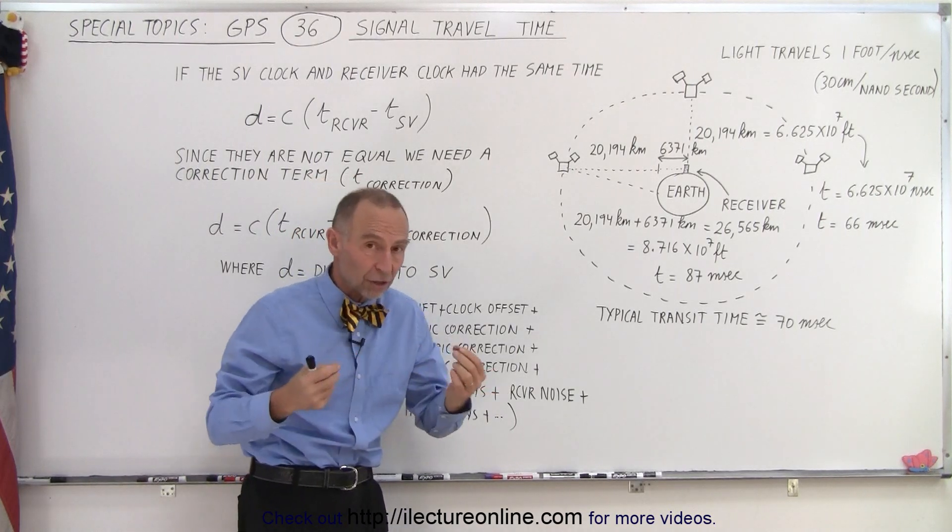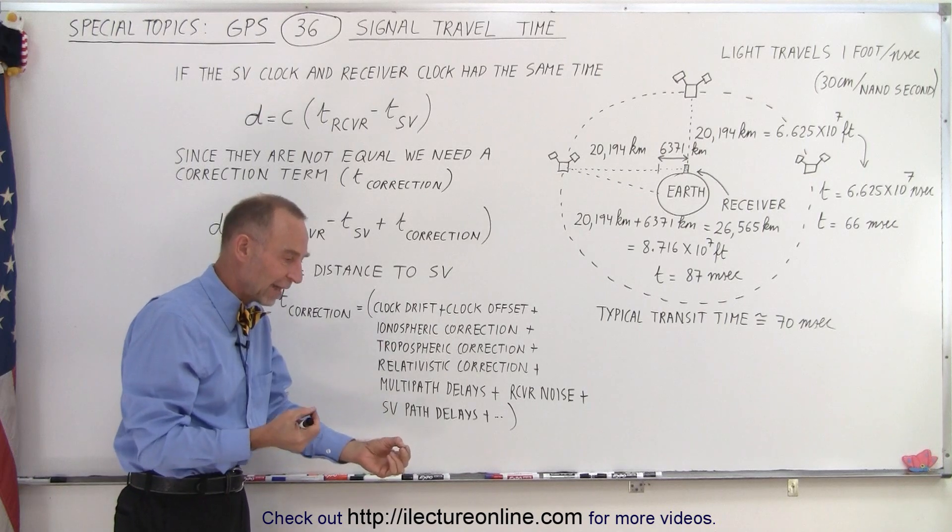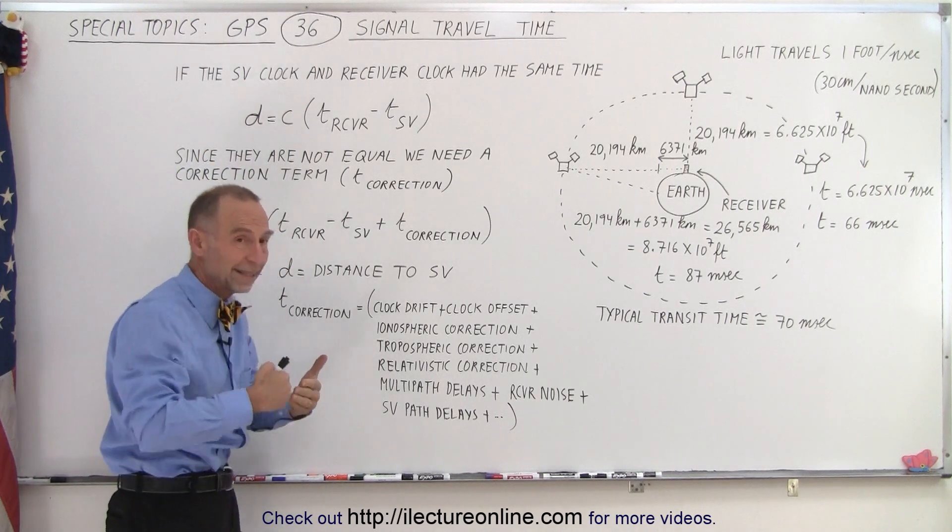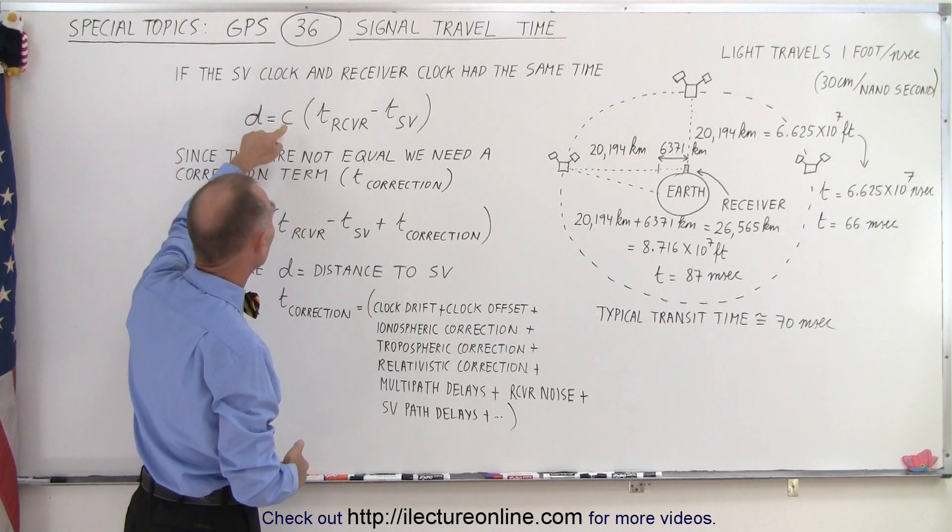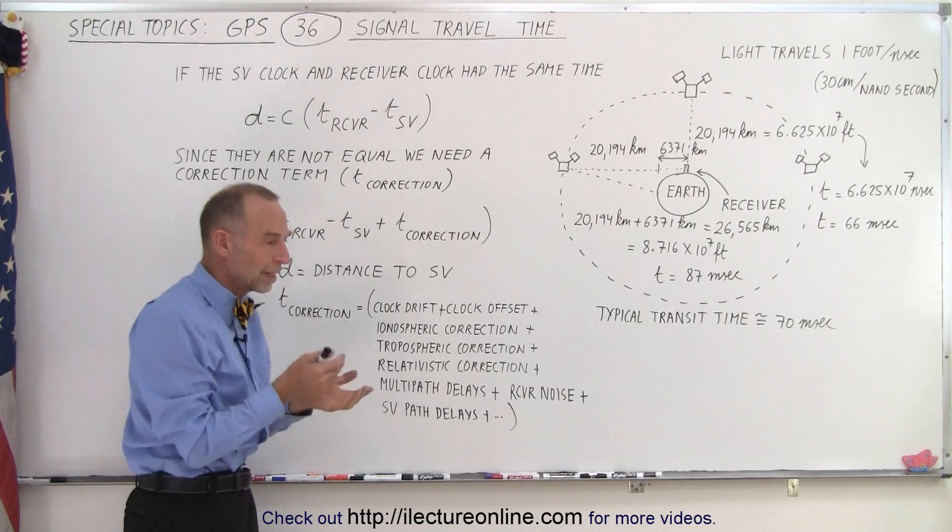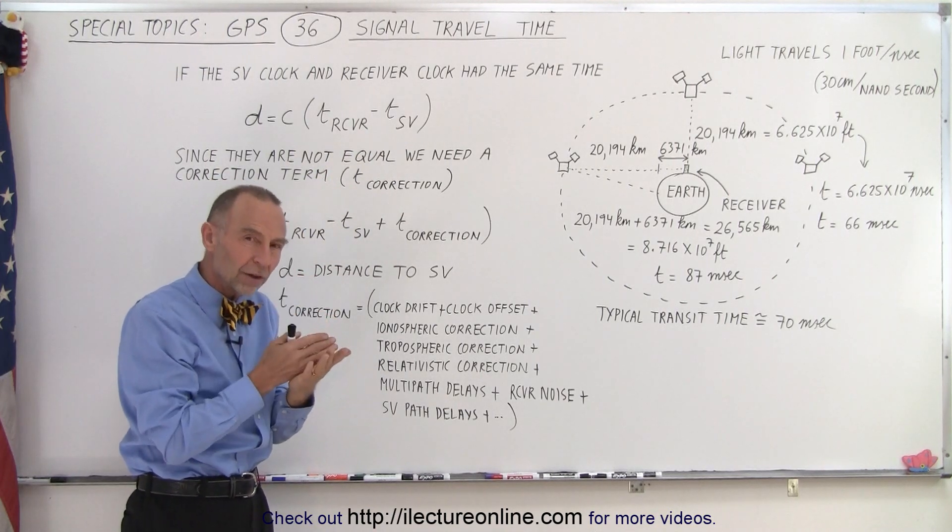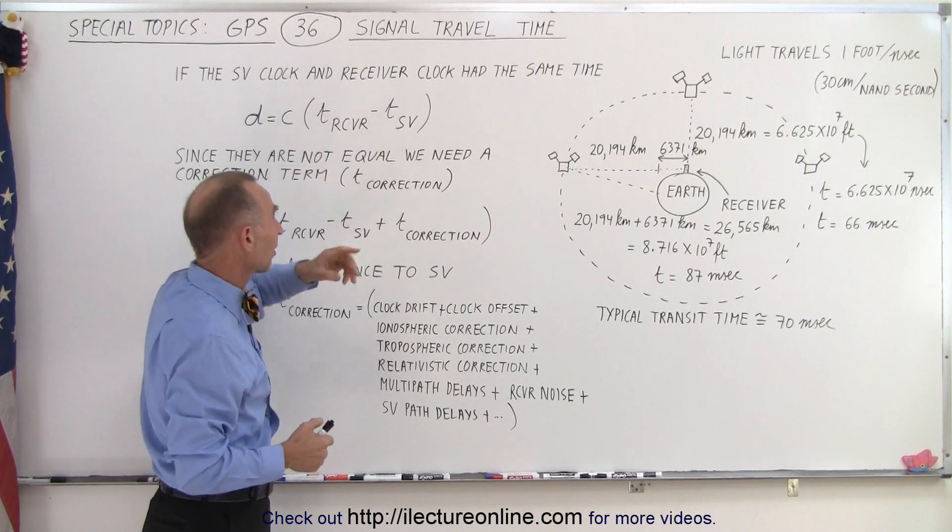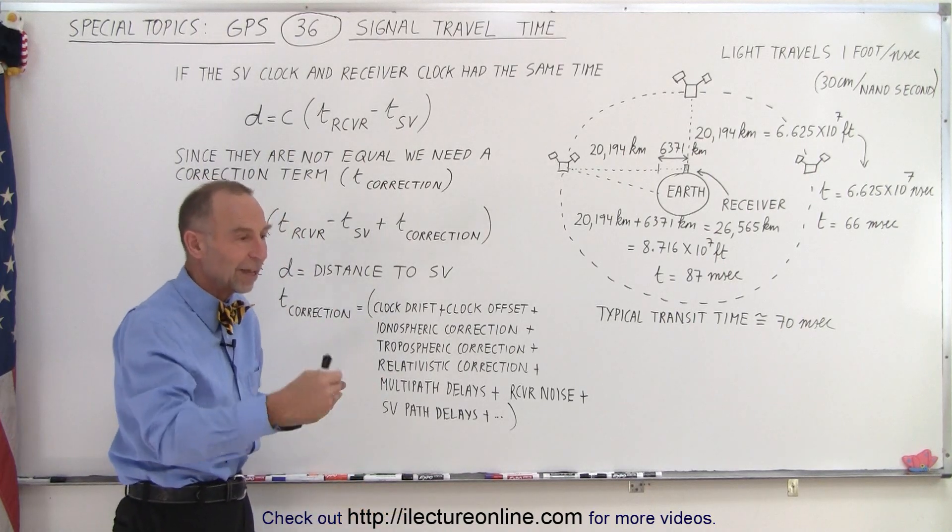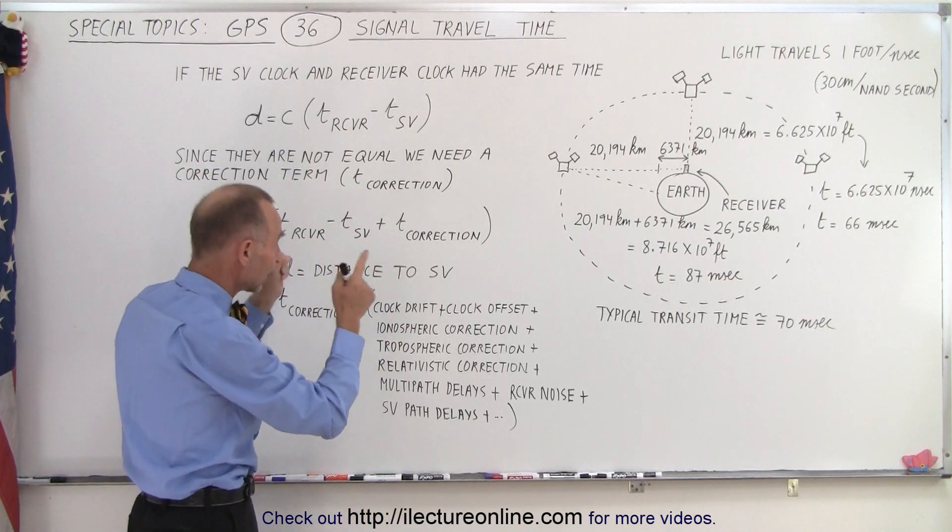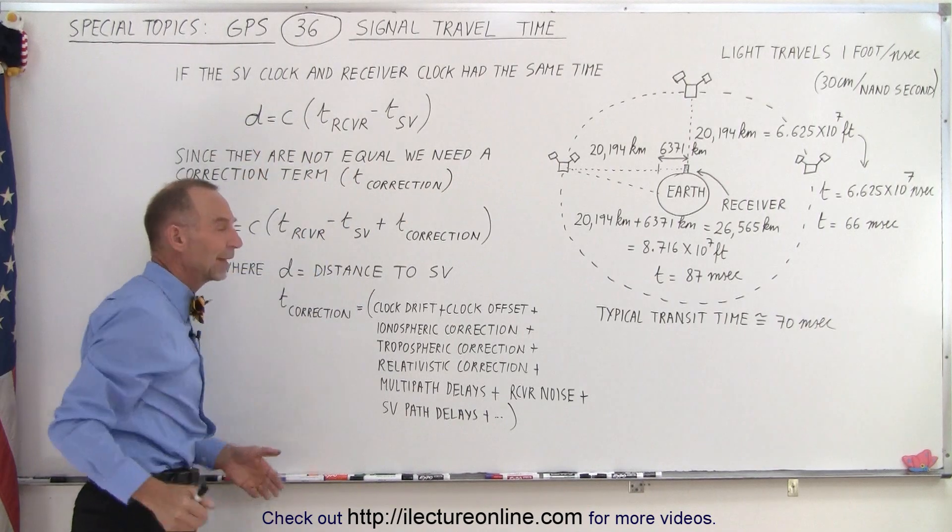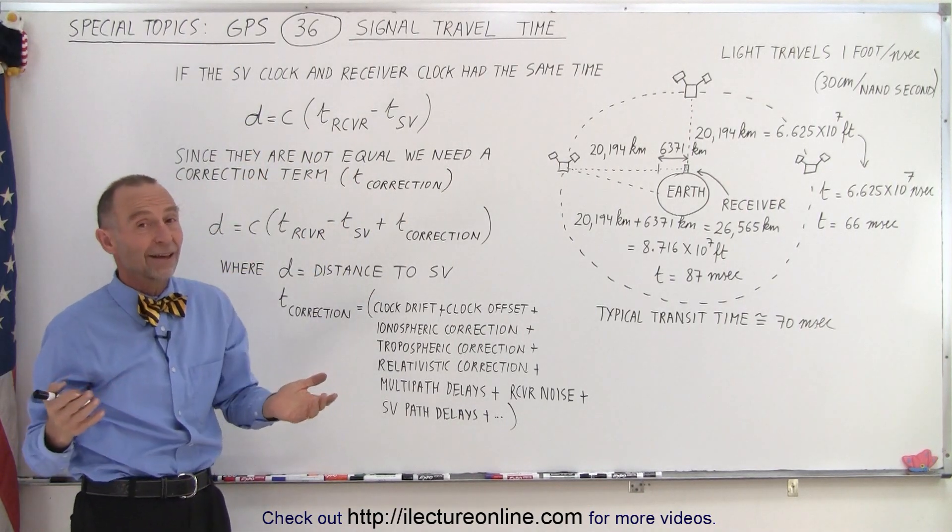If the clocks were perfect and the clock on the receiver was exactly the same as the clock on the SV, then we can calculate the distance between the two, which would be the speed of light times the difference between the time of the receiver and the time of the SV. If we can calculate what the time of the send was from the SV and subtract from that the time of the receiver, we would expect to find a difference about 70 milliseconds. We multiply times the speed of light and we get the distance to the receiver. That would be easy if we could do that.